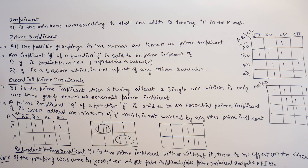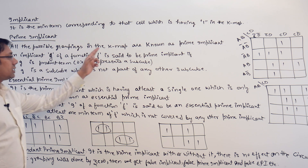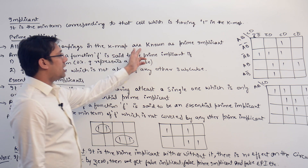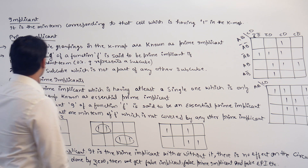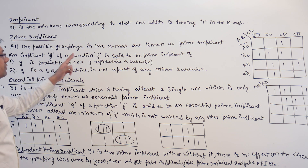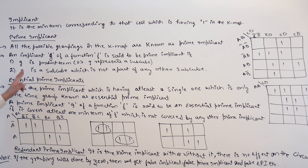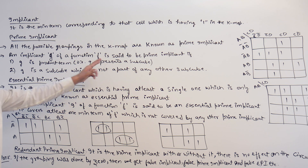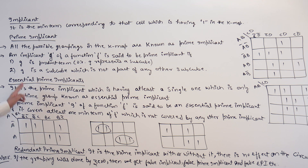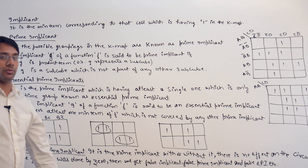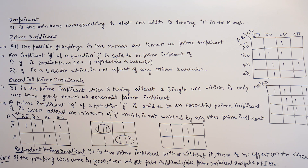A prime implicant is an implicant which is not a part of any other subcube. You can say all the possible groupings in the K-map are known as prime implicants. An implicant G of a function F is said to be a prime implicant if G is a product term representing a subcube, and G is a subcube which is not a part of any other subcube — then it is a prime implicant.